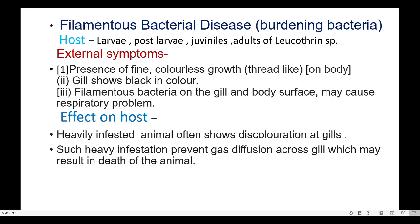Filamentous bacterial disease is caused by Leucothrix species and affects larvae, post-larvae, juveniles, and adults. External symptoms include colorless growth on the body, black coloration of the gills, and respiratory problems caused by bacteria on the gill and body surface. Heavily infected animals show gill discoloration, impaired gas diffusion, and may die.